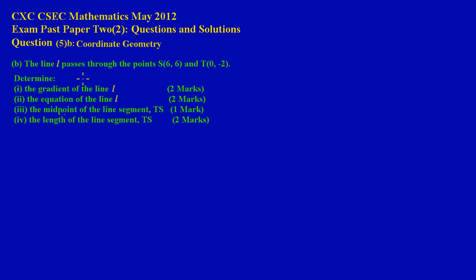Welcome back. In this video we're going to look at the solution to question 5b, a typical coordinate geometry question about the graph of a straight line. They have given us the line L passing through points S which is (6, 6) and point T which is (0, -2). They're asking us to determine, in part 1, the gradient of the line L.